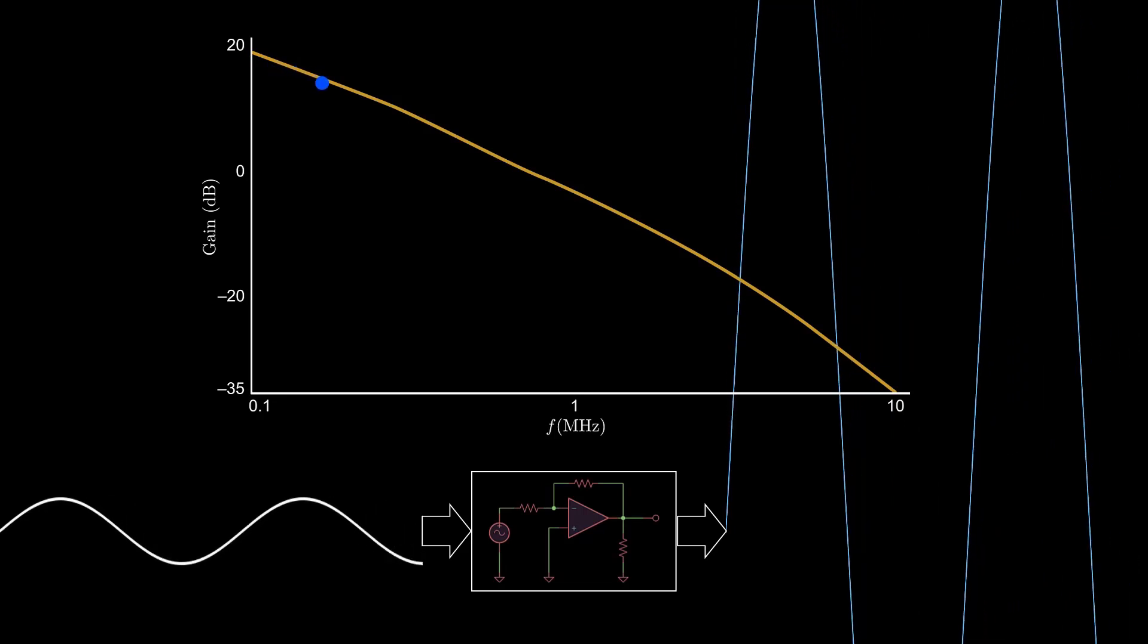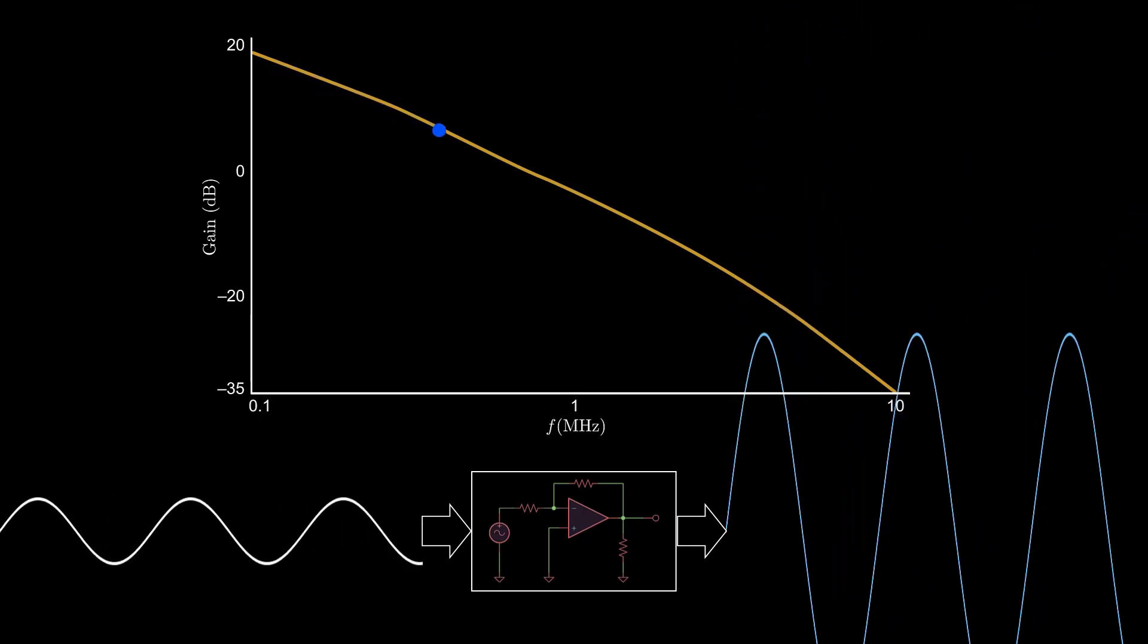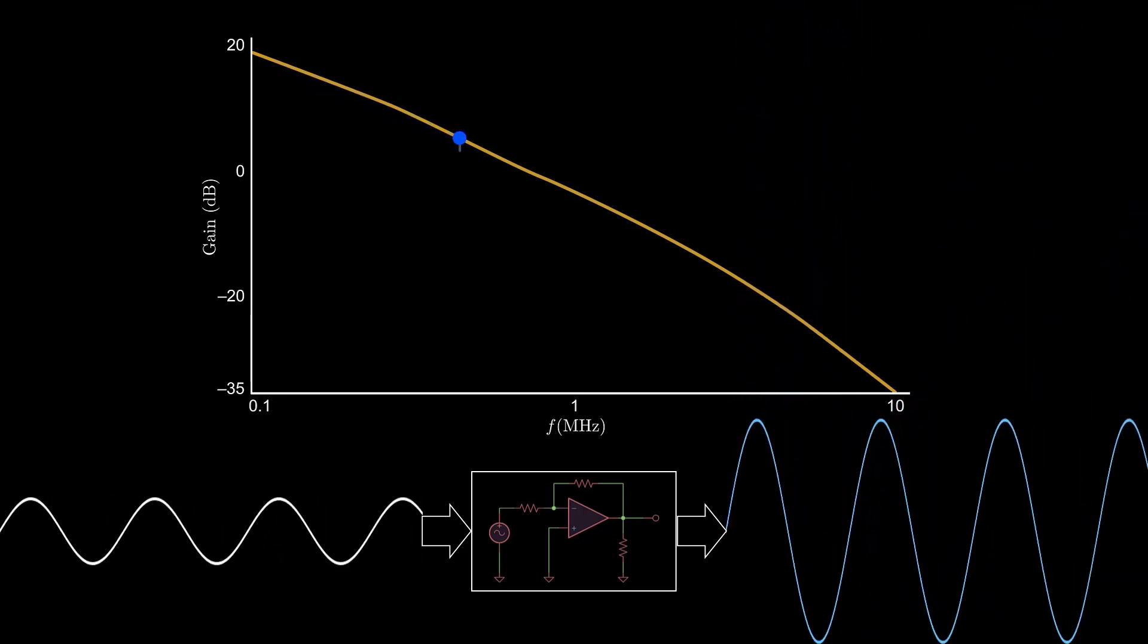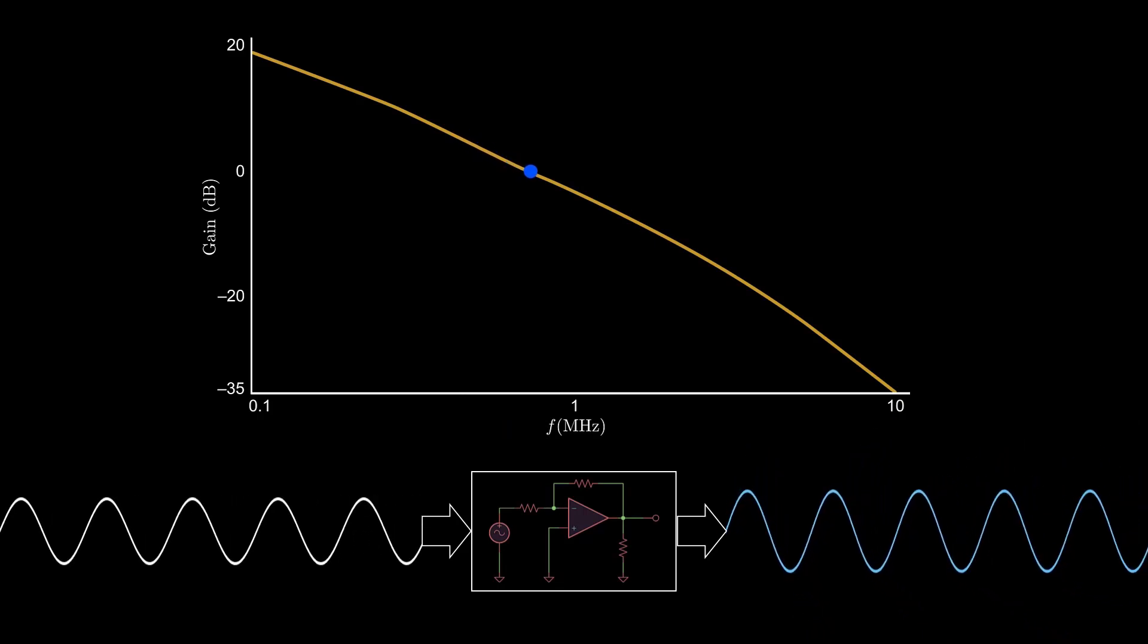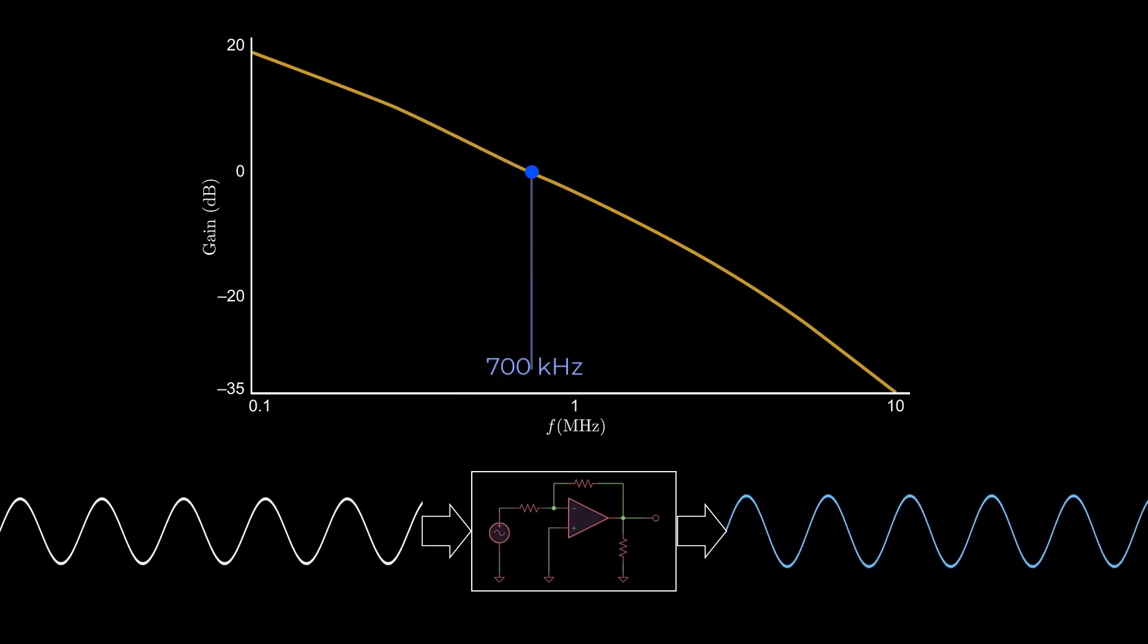At higher frequencies, the gain diminishes. At a frequency of 300 kHz, the gain drops to 5 dB, equivalent to an amplitude multiplier of about 3.2. This trend continues, and we reach 0 dB at about 700 kHz, implying no gain or loss in the signal.